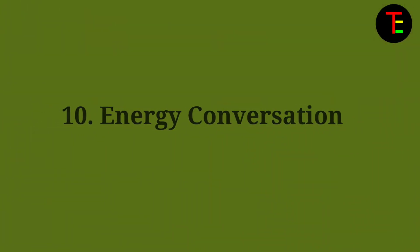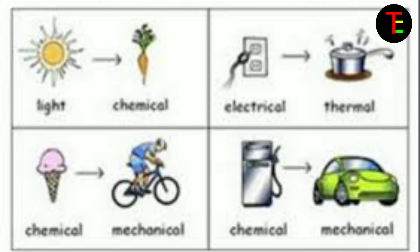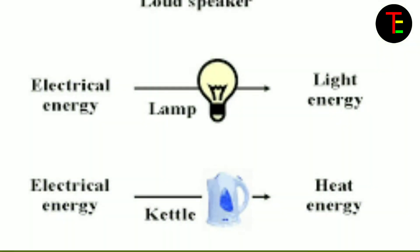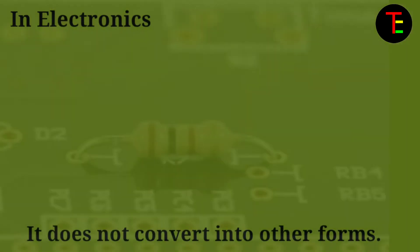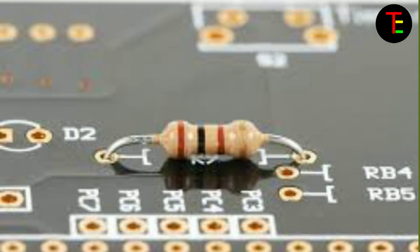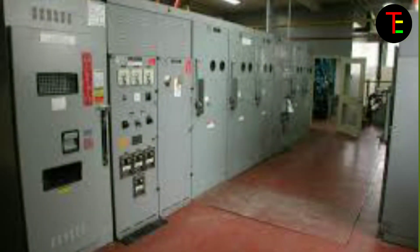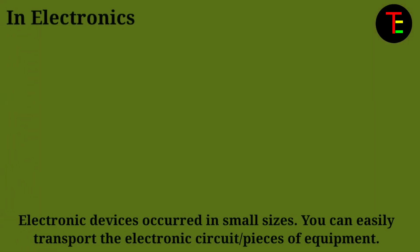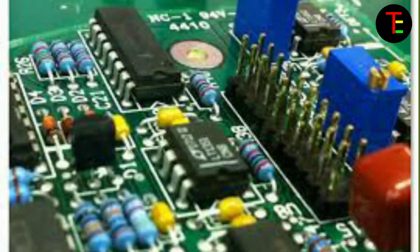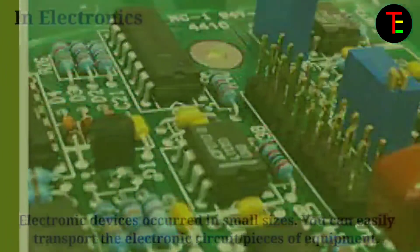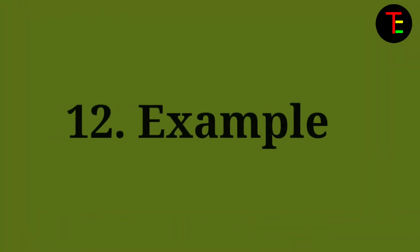No.10 Energy conversion: In electrical, electrical energy converts into another form of energy — that is heat, motion, or light. But in electronics, it does not convert into other forms. No.11 Size: In electrical, electrical devices occupy a large size and require more space. But in electronics, devices occur in small sizes — you can easily transport the electronic circuits or pieces of equipment.